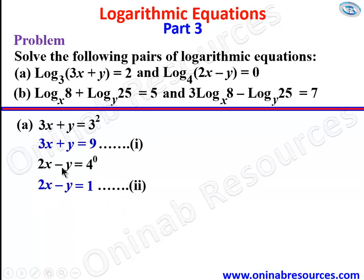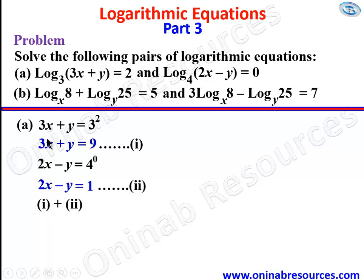This is going to be solved simultaneously. We have 3x and 2x, plus y and minus y. The operation on equations 1 and 2 that will eliminate y is addition. So equation 1 plus equation 2: adding the corresponding terms, 3x plus 2x is 5x, and plus y minus y gives 0, so y is eliminated.